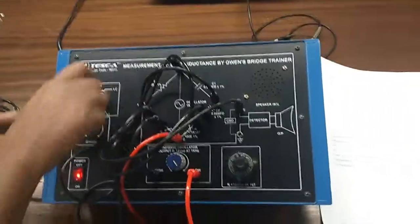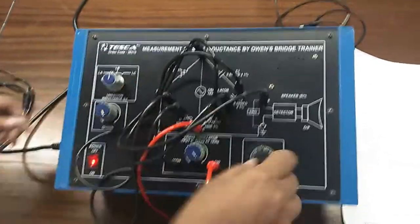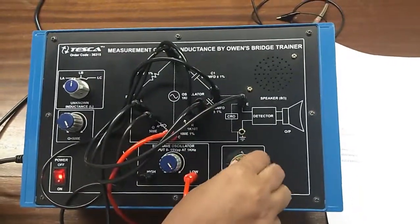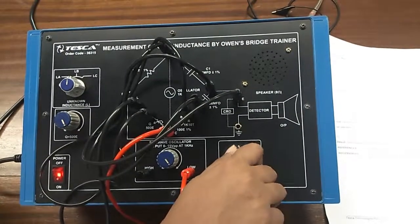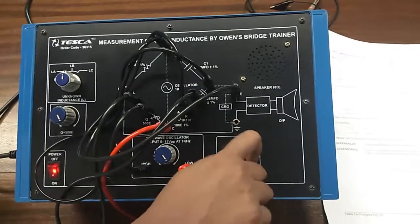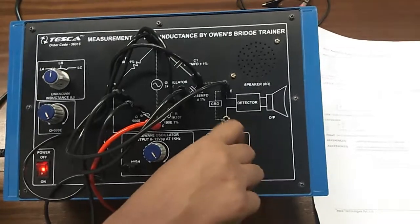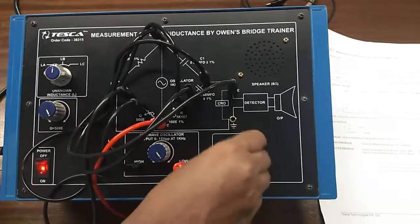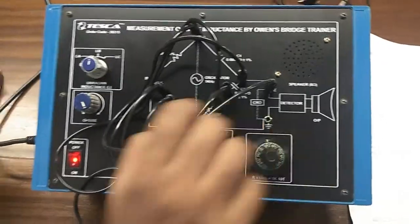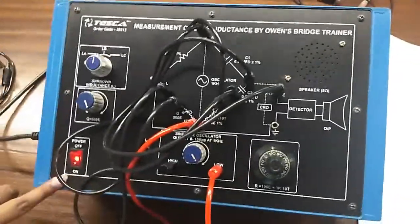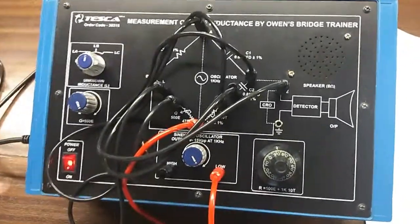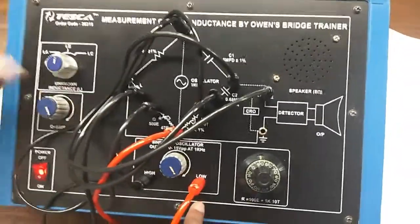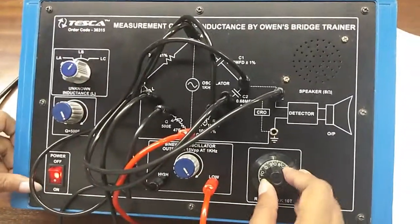Now I am choosing L-B and again repeat the same steps. Note down the value when the sound is minimum, like this.